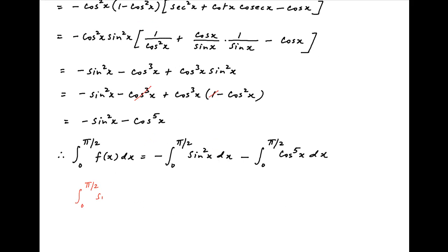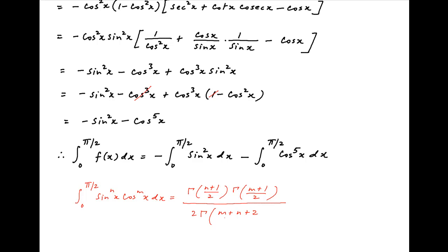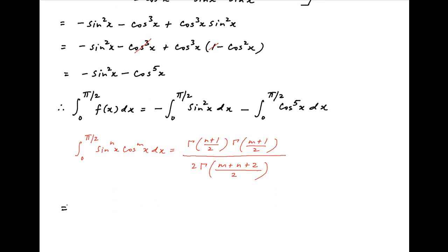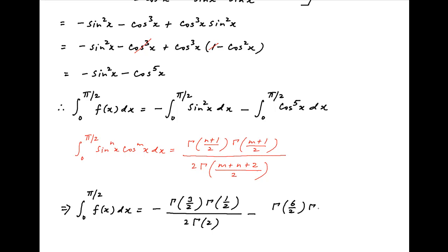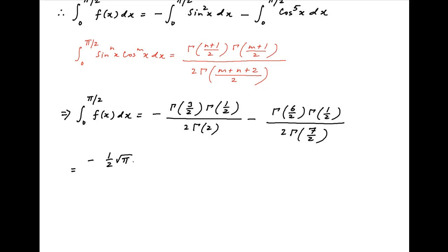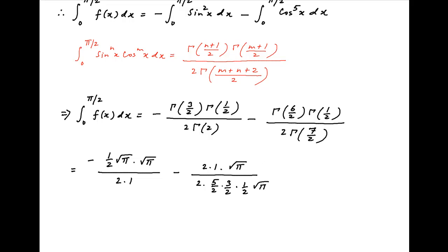Recall the standard result for definite integrals: the integral from 0 to π/2 of sinⁿ(x) cosᵐ(x) dx equals Γ((n+1)/2) times Γ((m+1)/2) divided by 2 times Γ((m+n+2)/2). Applying this result, the value of the integral from 0 to π/2 of f(x) dx equals minus Γ(3/2) times Γ(1/2) divided by 2Γ(2) minus Γ(6/2) times Γ(1/2) divided by 2Γ(1/2) times Γ(7/2).